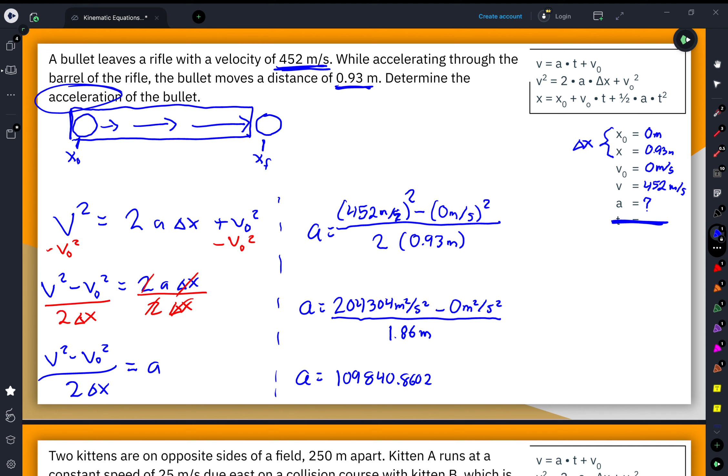Now because my numerator is meters squared over second squared, and my denominator is meters, this simplifies down to meters per square second, which is indeed the units of acceleration.